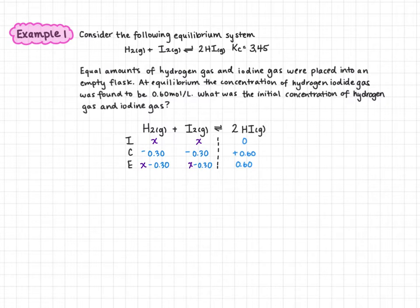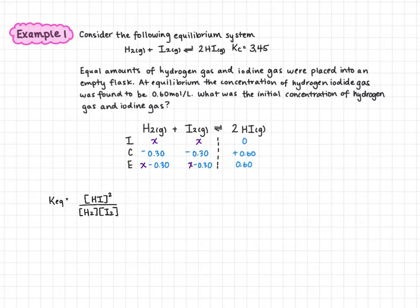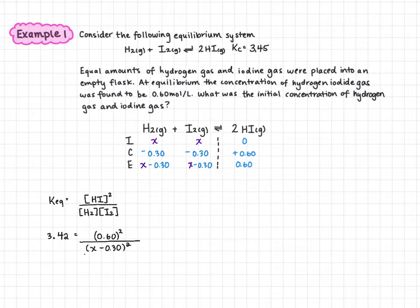With the ice table set up, we plug into our equilibrium expression. We can use Keq and Kc interchangeably: [HI]² over [H₂] times [I₂]. So Keq equals 3.42, and that equals 0.60 squared over (x minus 0.30) squared. We can write it that way because (x − 0.30)(x − 0.30) simplifies to (x − 0.30)².